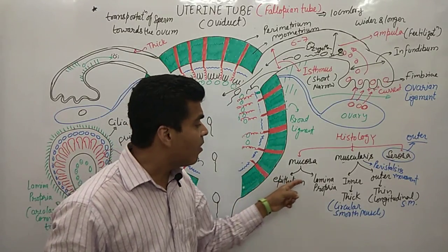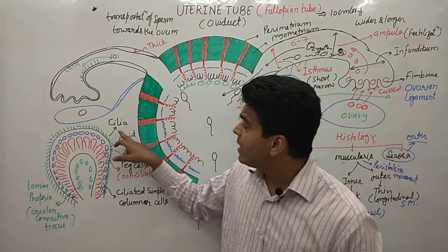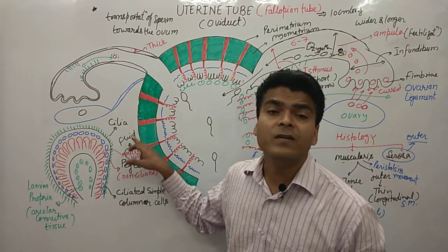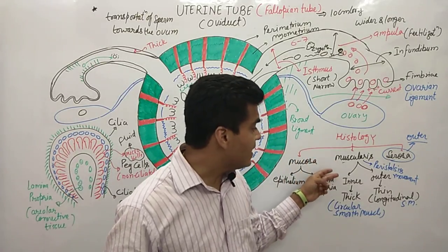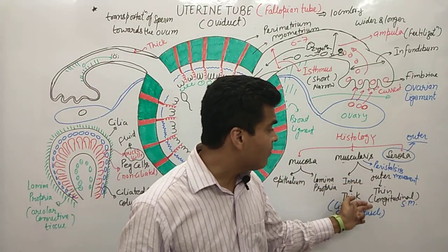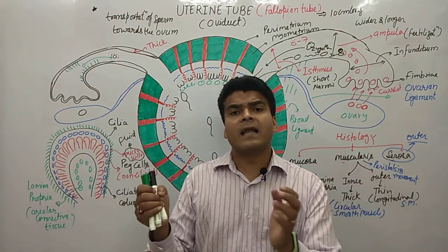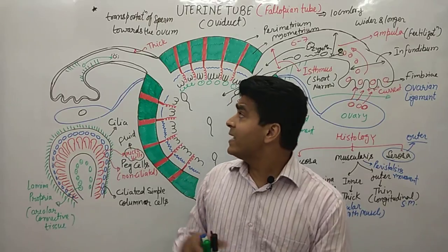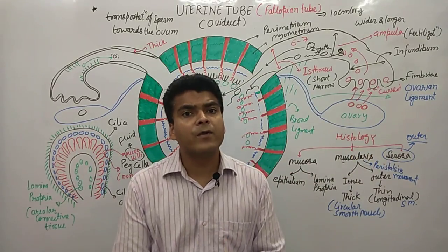The mucosa consists of epithelium and lamina propria, with areolar connective tissue. The epithelium includes ciliated cells as well as peg cells. Peg cells are non-ciliated but have microvilli that secrete fluid providing nutrition to the fertilized ovum. The muscularis has inner and outer smooth muscle layers — a thick inner circular layer and a thin outer longitudinal layer — responsible for peristalsis movement. Cilia and muscularis together move the fertilized ovum toward the uterus for implantation. The outermost layer is the serosa.